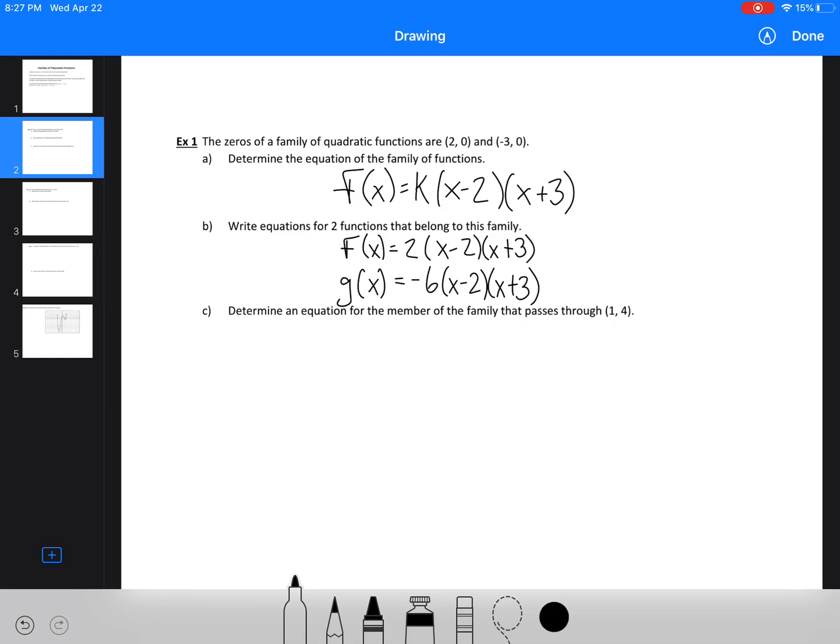You could have the positive and negative of one thing, and that's 2 different functions that belong to the same family. The next step would be determine an equation for the member of the family, so this is an individual equation that passes through (1, 4). Well, that's giving us an x and a y value. So now all we're going to do is we're going to say 4 equals k times (1 minus 2) and (1 plus 3).